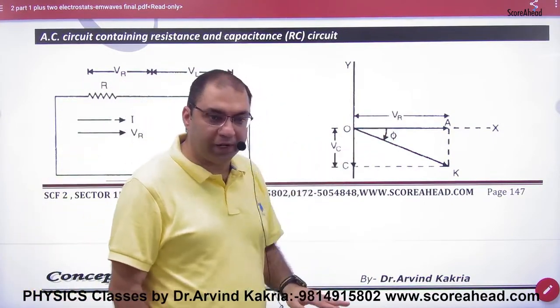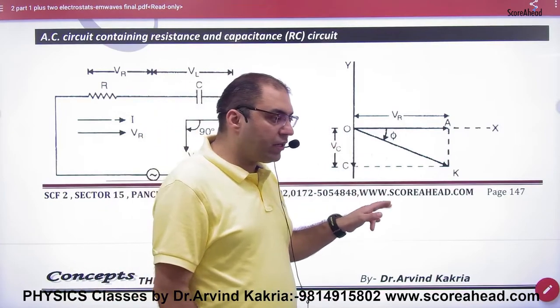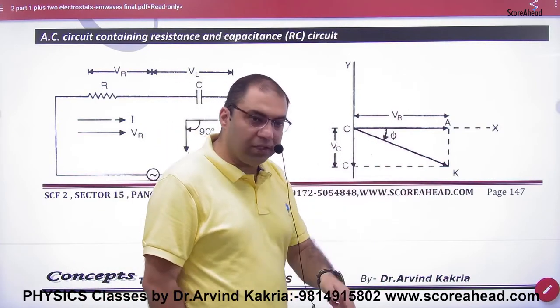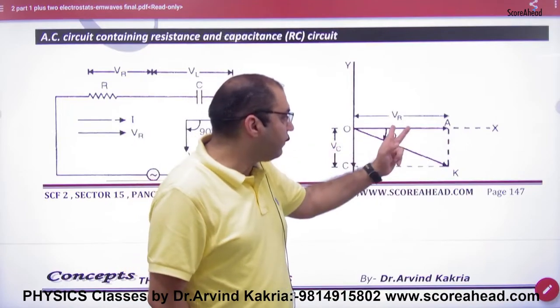Because VC is down and VR is horizontal, the net voltage will be under root of VR square plus VC square. And tan phi will be VC divided by VR.